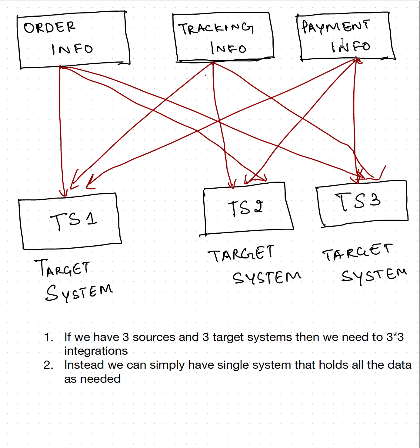So these three are independent data systems and we are trying to consolidate with different target systems - TS1, TS2, and TS3 as you can see in this diagram. If your company grows and you have more systems like trade events, the integrations become essentially very complex. We have three source systems and three target systems and it takes nine integration steps to integrate all these systems. If you have A source systems and B target systems it's A times B, so it's really painful. I have personally faced this challenge when working in the industry.